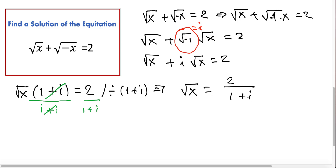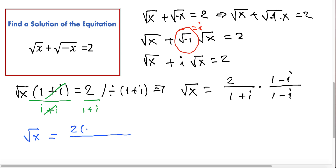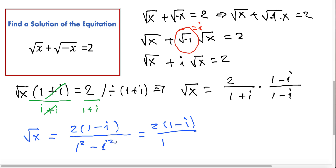Now we want to rationalize this denominator. We multiply both sides by (1 − i) over (1 − i). So square root of x equals 2 times (1 − i) divided by (1 + i)(1 − i). The denominator is 1² − i² = 1 − (−1) = 2. Simplifying by 2 gives us square root of x equals 1 − i.